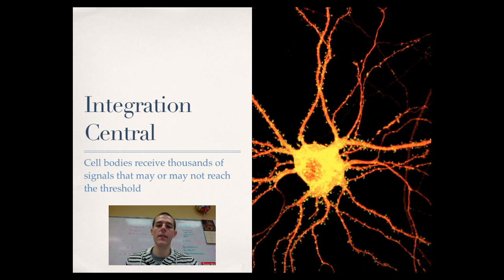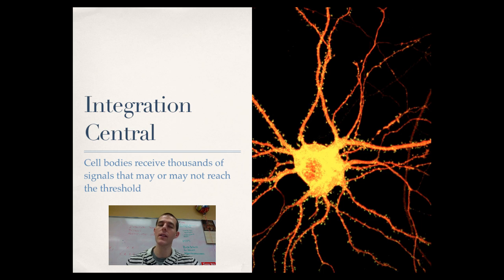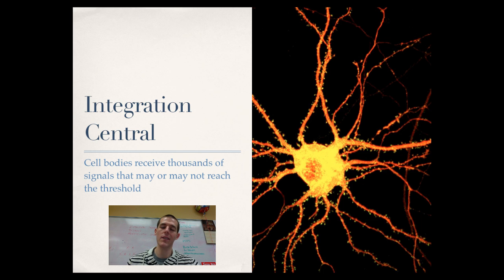That cell body has signals coming into it from all over the place. One cell body could have hundreds of dendrites on it. Each of those dendrites is receiving signals that are either excitatory or inhibitory. Basically, the cell body receives all these excitations and inhibitions and processes them all together. Based on the sum of all of that, it either fires off an action potential or holds back. If most signals are pushing it towards excitation, the action potential fires; if most are inhibitory, it will not send on the signal. This really is integration central of the nervous system.